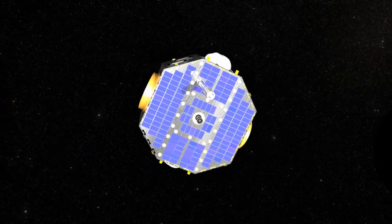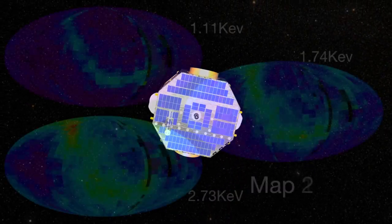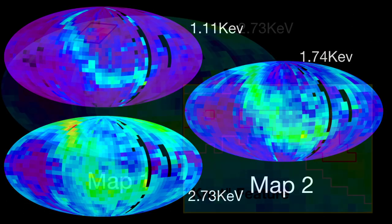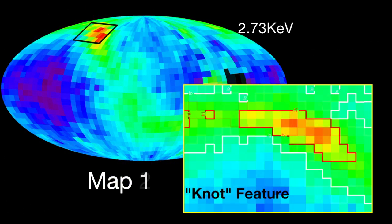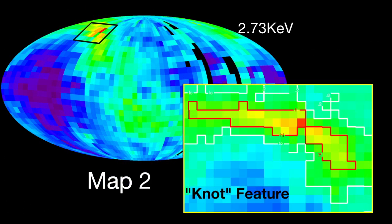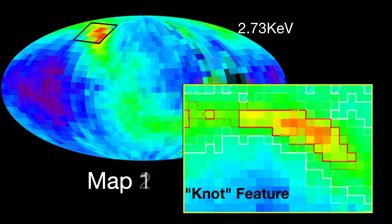IBEX is led by Dave McComas of the Southwest Research Institute in Texas. Its first major discovery was a ribbon of bounced ENAs showing unexpected activity at the edge of the solar system. Subsequent measurements show that this ribbon changes over time.